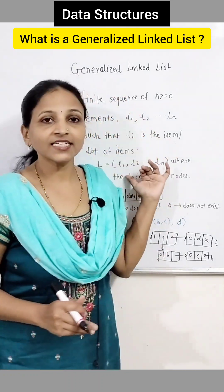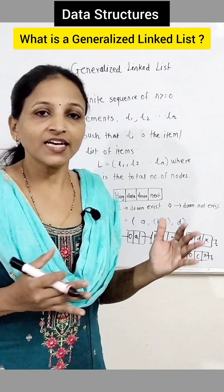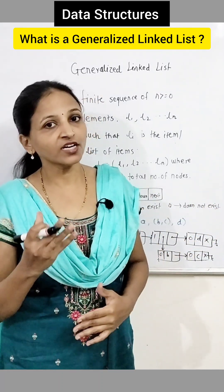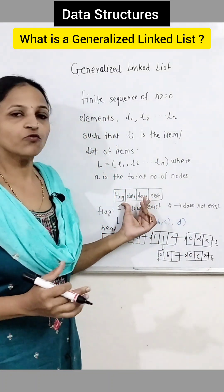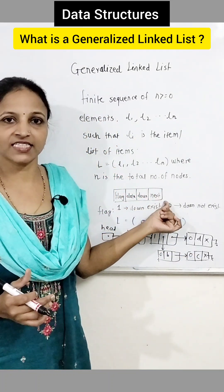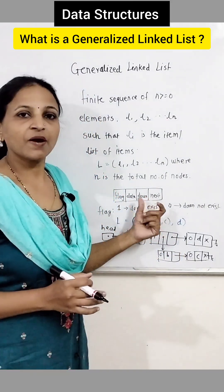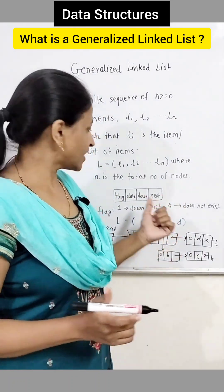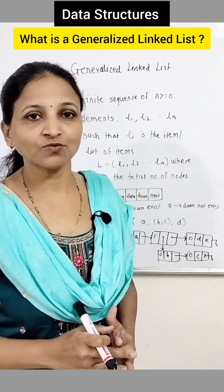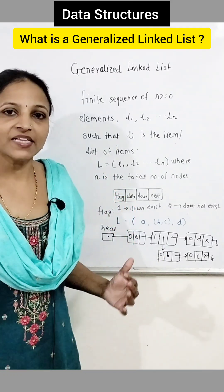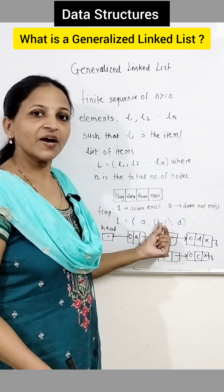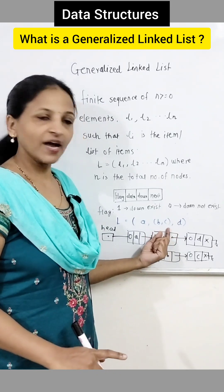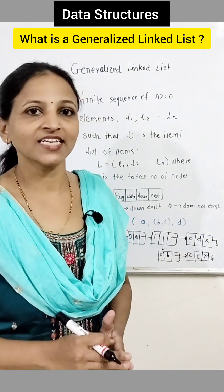Now what is the generalized linked list? It is just a sequence of items like L1, L2, L3 up to Ln, where each Li represents any item or list of items. Here, the node will have four parts in it: flag, data, down, and next. Normally the linked list will have data and next part, but the generalized linked list will have four parts — flag, data, down, and next. Either data is present or down is present; both are not compulsory at the same time. For example, this L list is internally having one data part. BC is again a list and D is again one data — meaning this is a collection of items and list of items. That's why it is a generalized linked list.